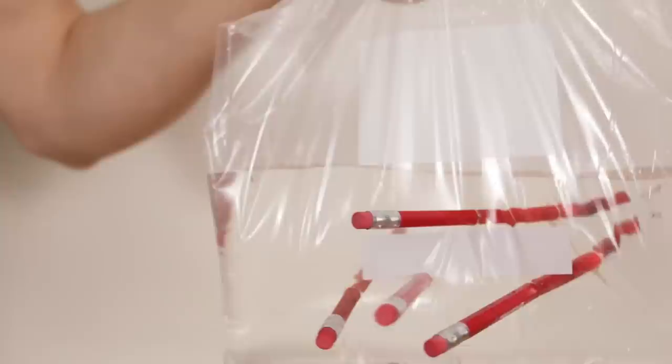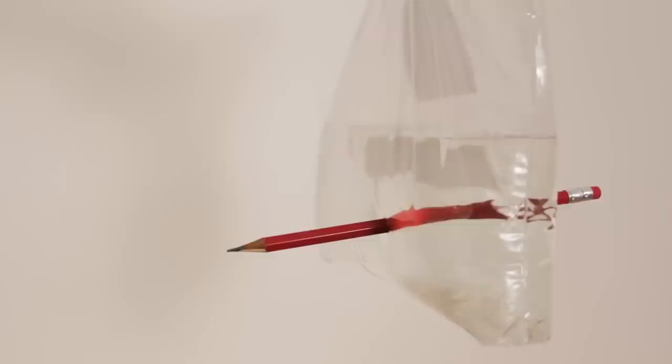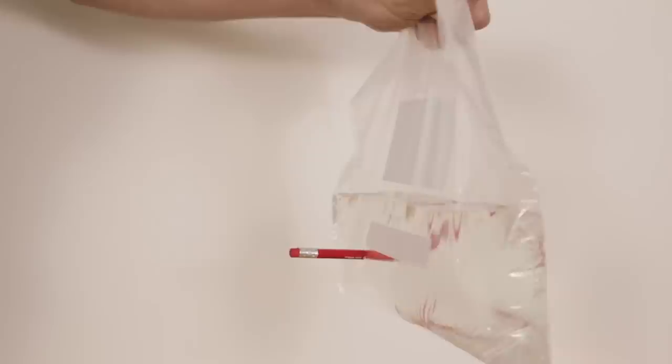The reason for this is because the plastic is made of polymers, which allows it to change shape. When you poked through it, the molecules hugged the pencil, creating a watertight seal which prevented it from leaking.